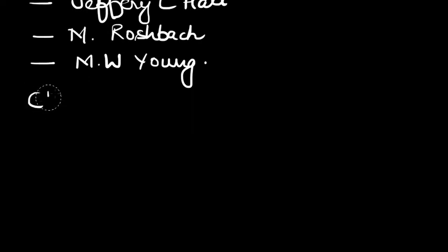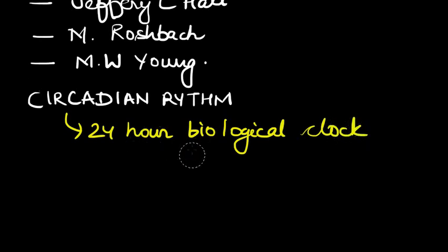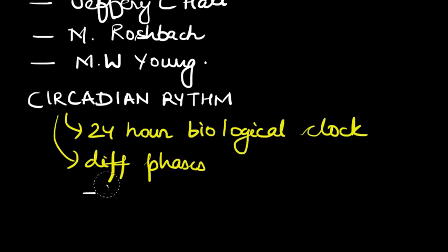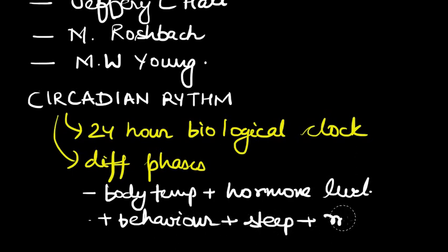Now a question comes to the mind, what is this circadian rhythm? This circadian rhythm is nothing but our 24-hour biological clock. This clock governs our behavior, our metabolism, our sleep cycle, our hormone level, our body temperature in order to maintain our body for different phases of the day. So it is affecting our body temperature, hormone level, behavior, sleep, and metabolism.